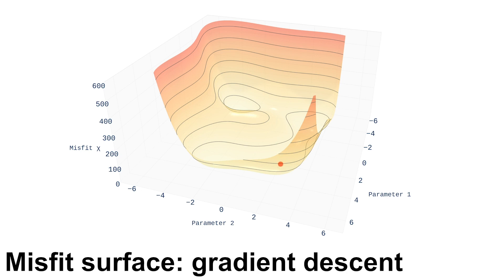In a typical FWI setting, we can easily have as many as a few million of these axes. To find a model that explains the observations, we want to find where the surface is lowest.